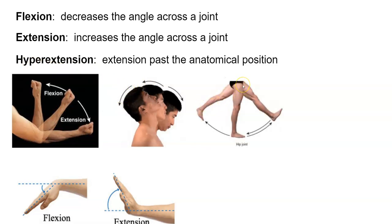We see that here as well. We're going to be looking at flexion and extension of the hip. So when this person brings their foot out, that's flexion of the hip. When they bring their foot back, that's extension. And then when they bring it past anatomical position, that's hyperextension.